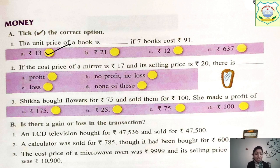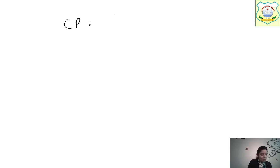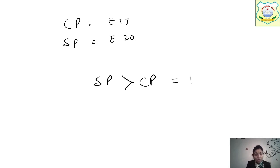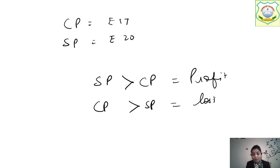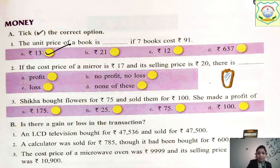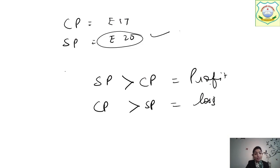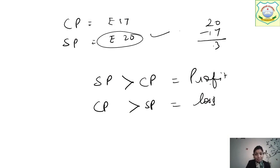Next question: the cost price of a mirror is ₹17 and the selling price is ₹20. CP is ₹17 and SP is ₹20. Since SP is greater than CP, it is a profit. If asked to find the profit: 20 − 17 = ₹3 profit.